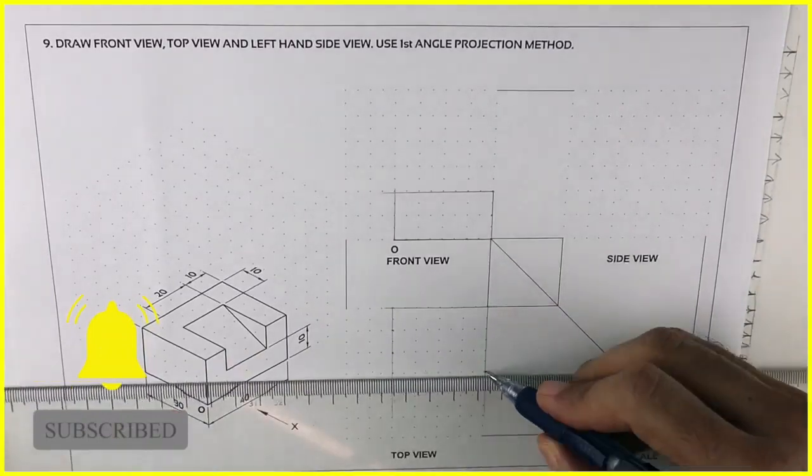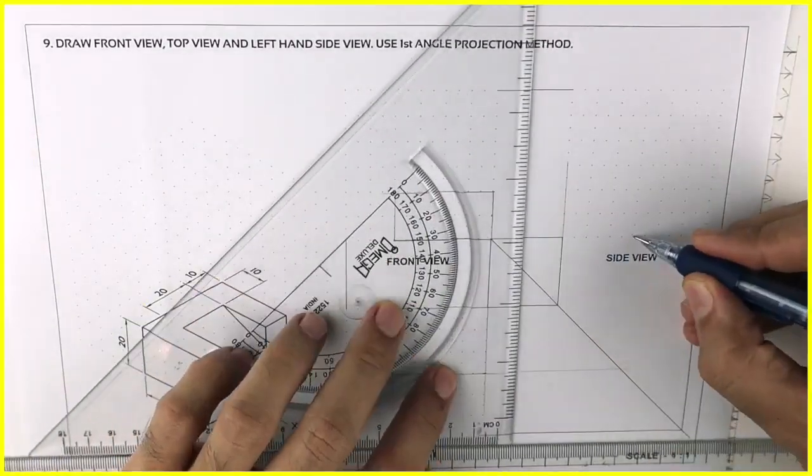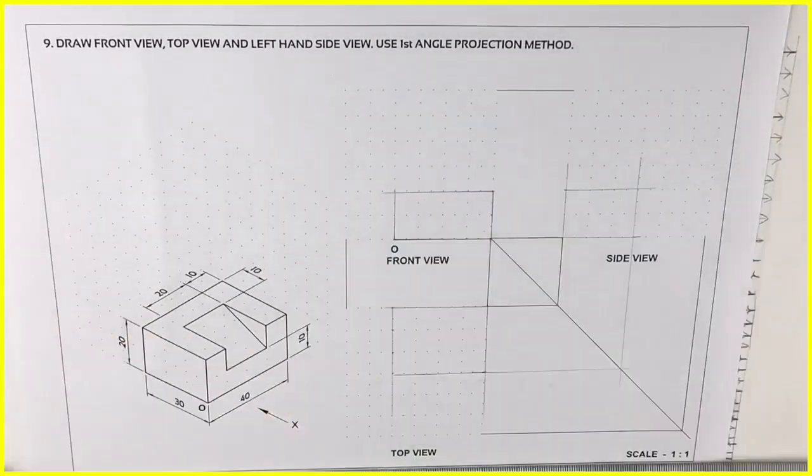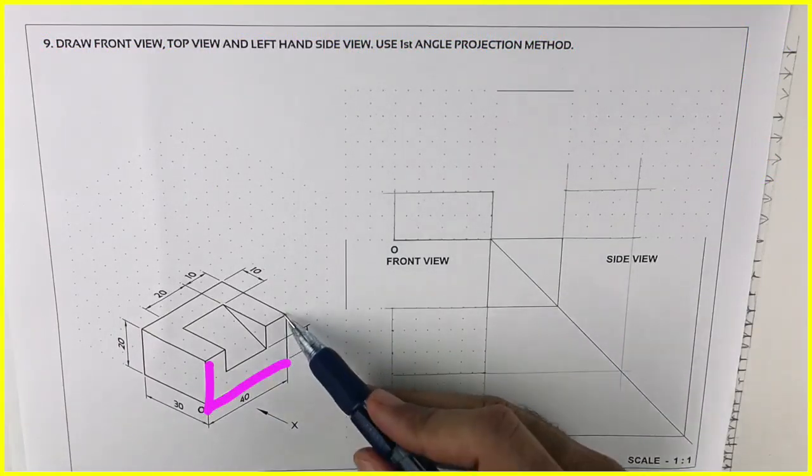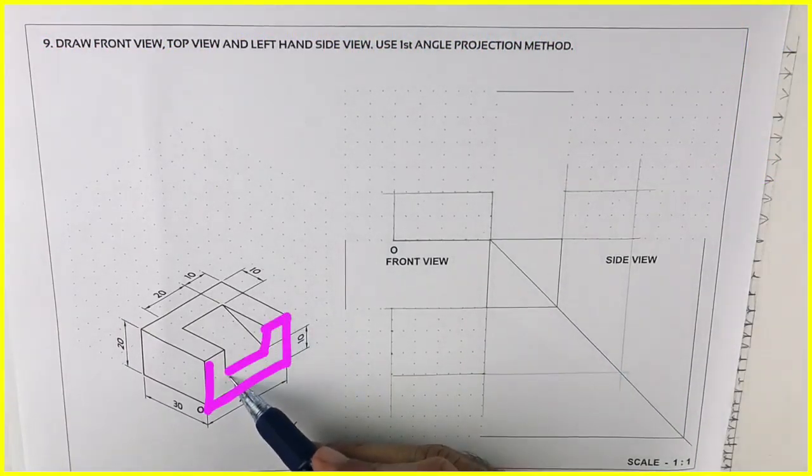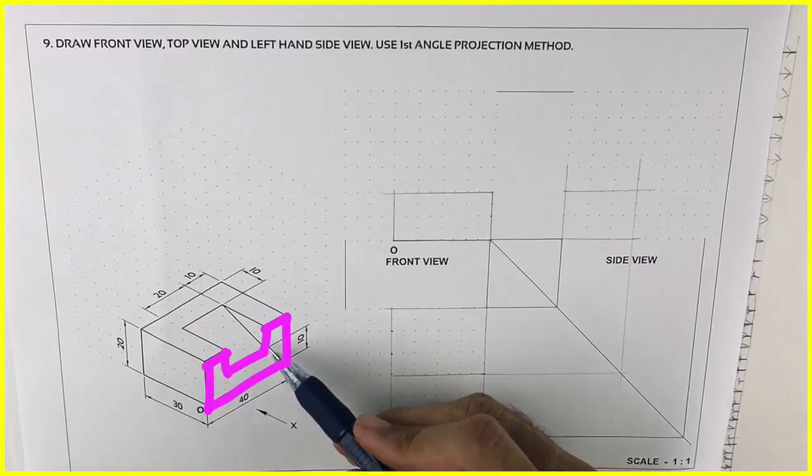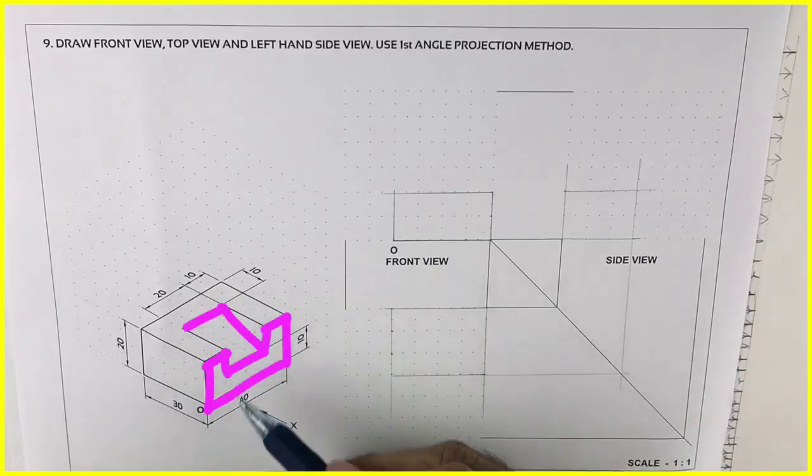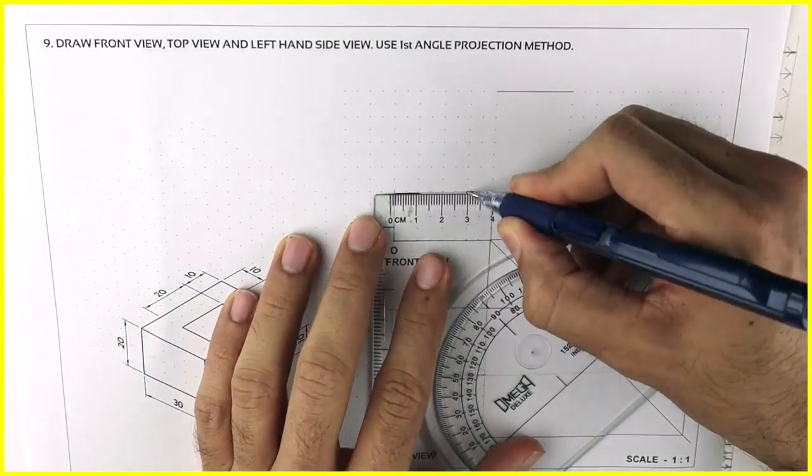We'll draw layout, it will be light. After drawing layout, we'll see front view. In front view you can see this U-shape and this rectangle also. So we'll try and draw that, 10.